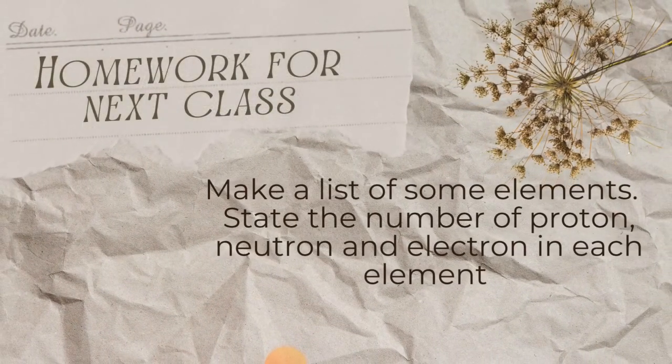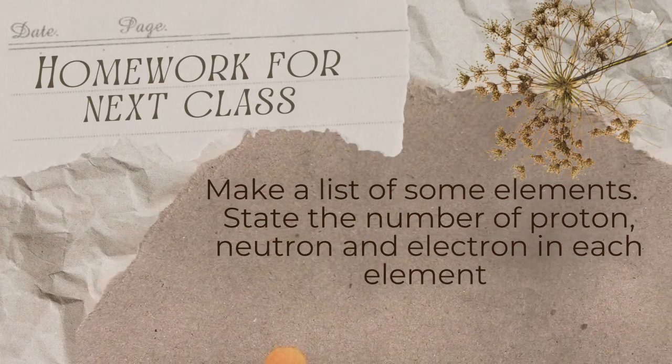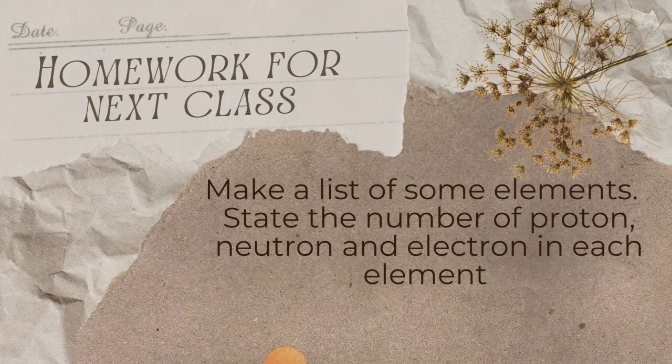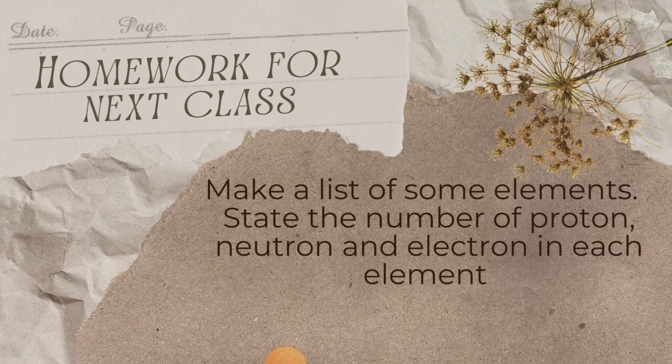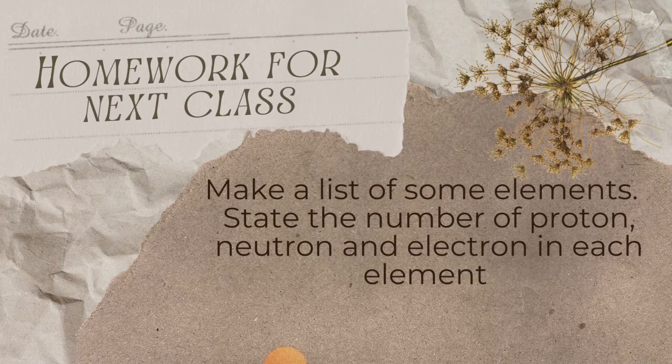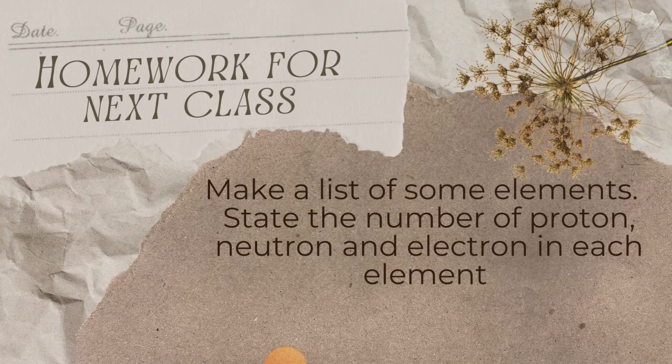So we have homework for you for the next class. It's easy. Make a list of some elements. State the number of protons, neutrons and electrons in each element. For example, you choose phosphorus. You know that phosphorus is atomic number 15. So it means that phosphorus will have 15 number of protons, 15 number of neutrons and 15 number of electrons.